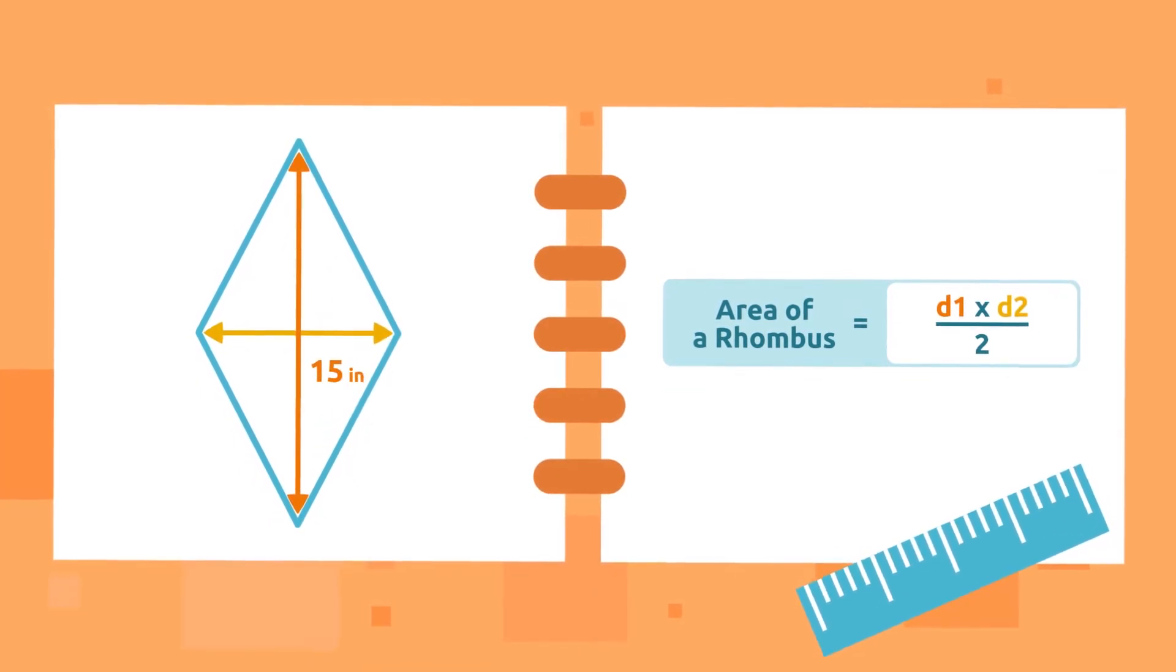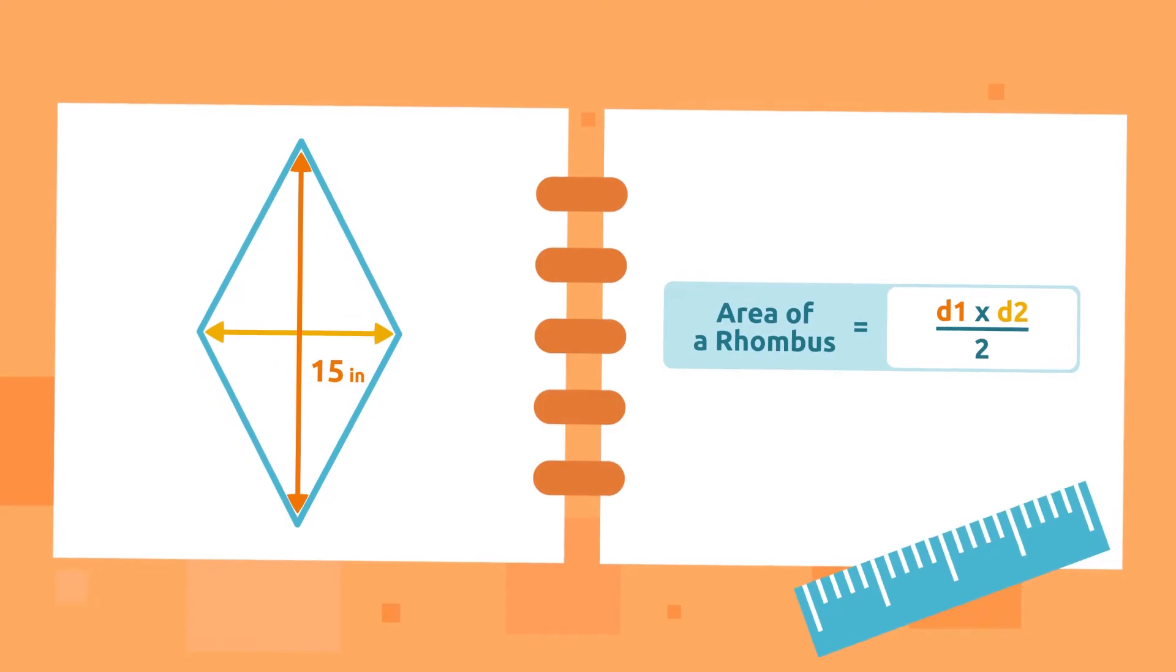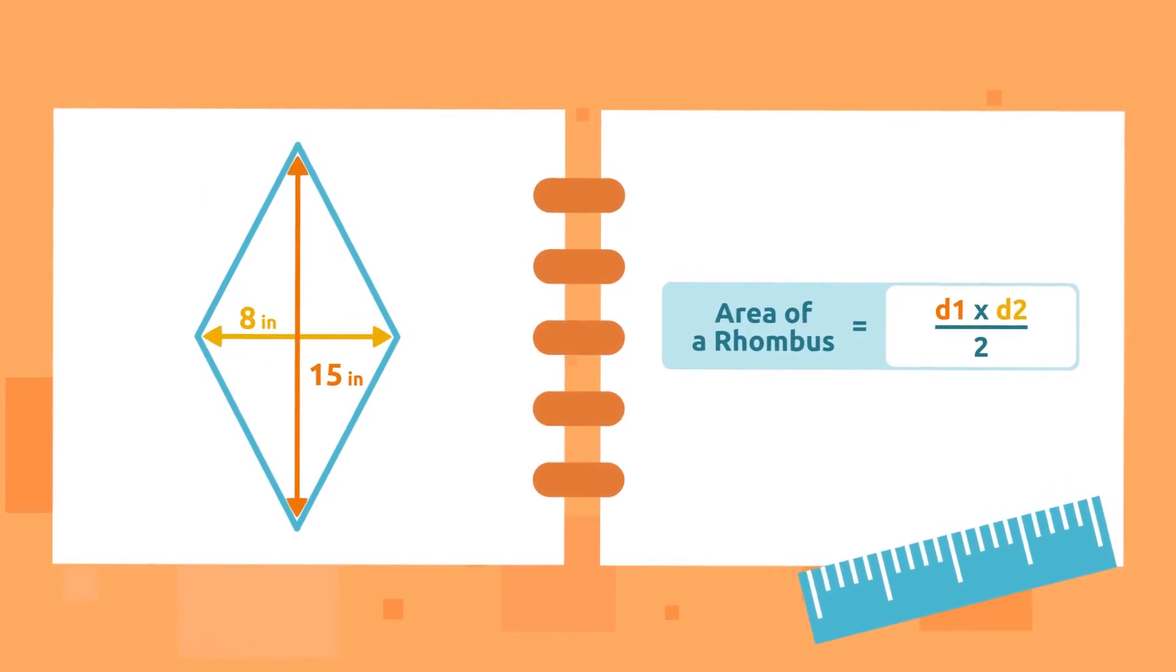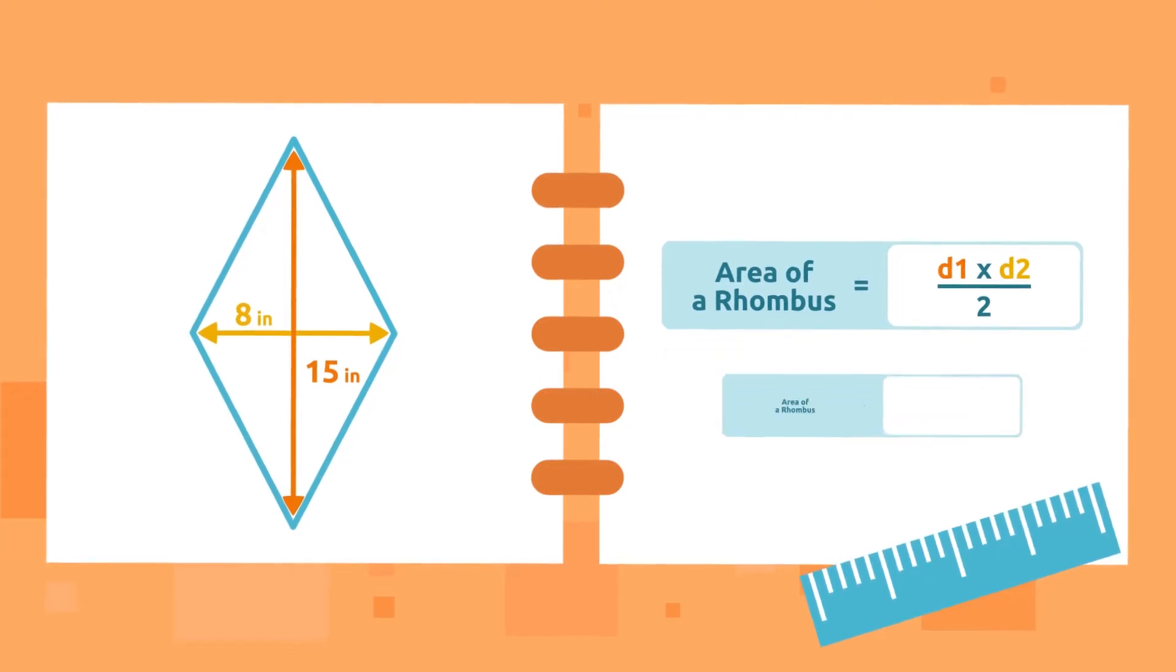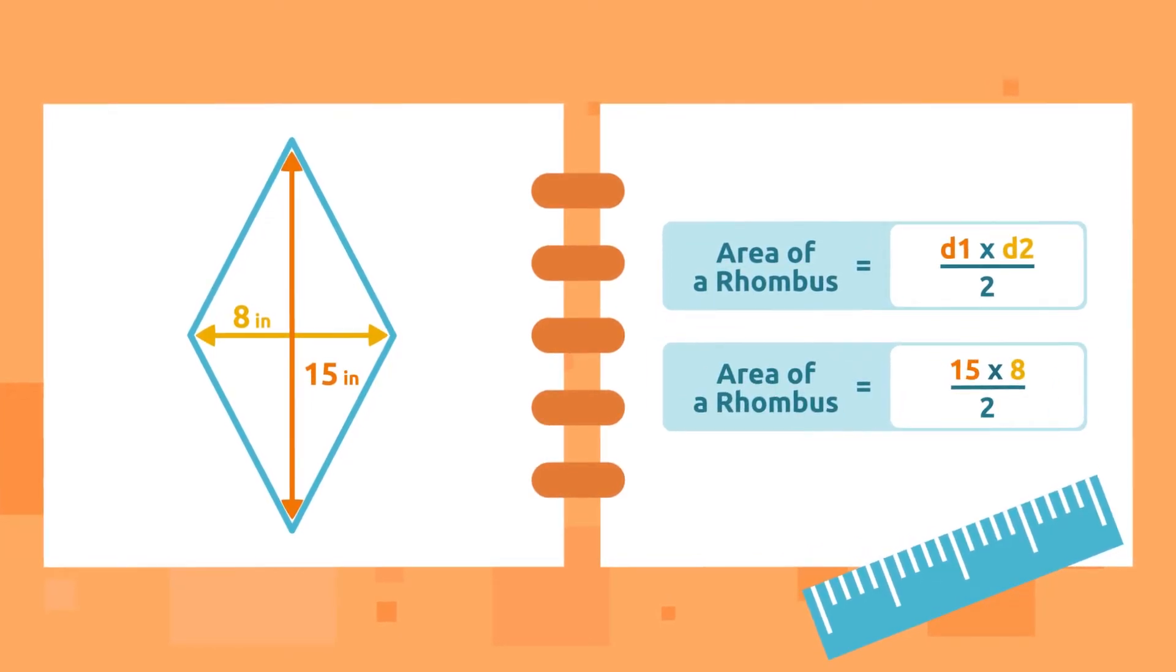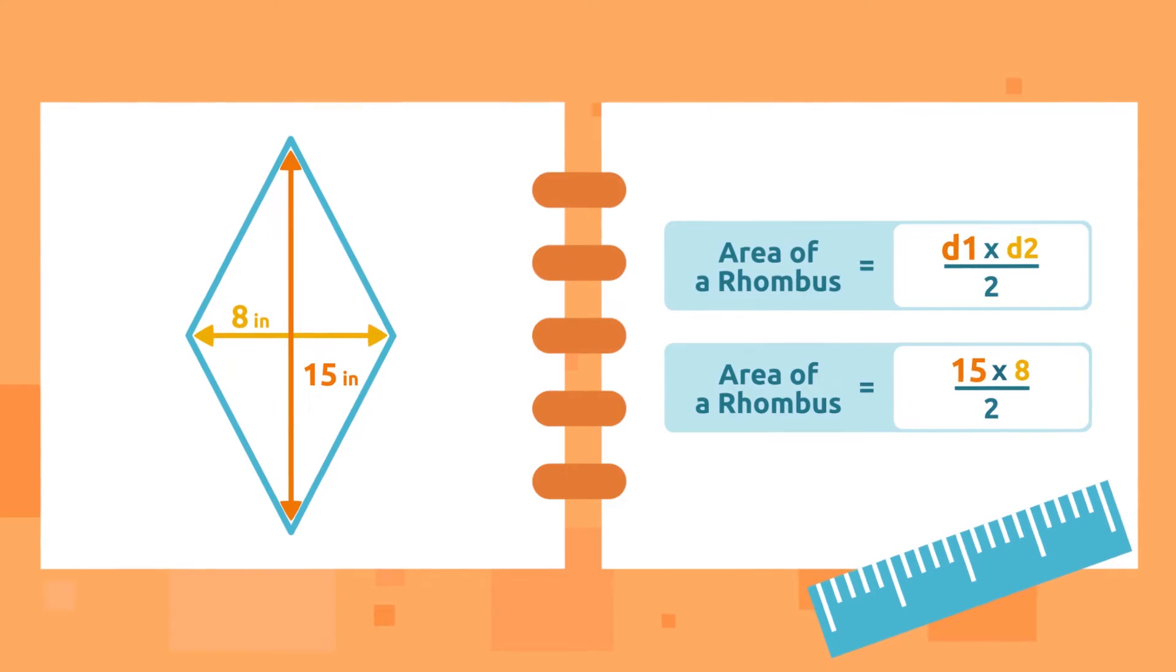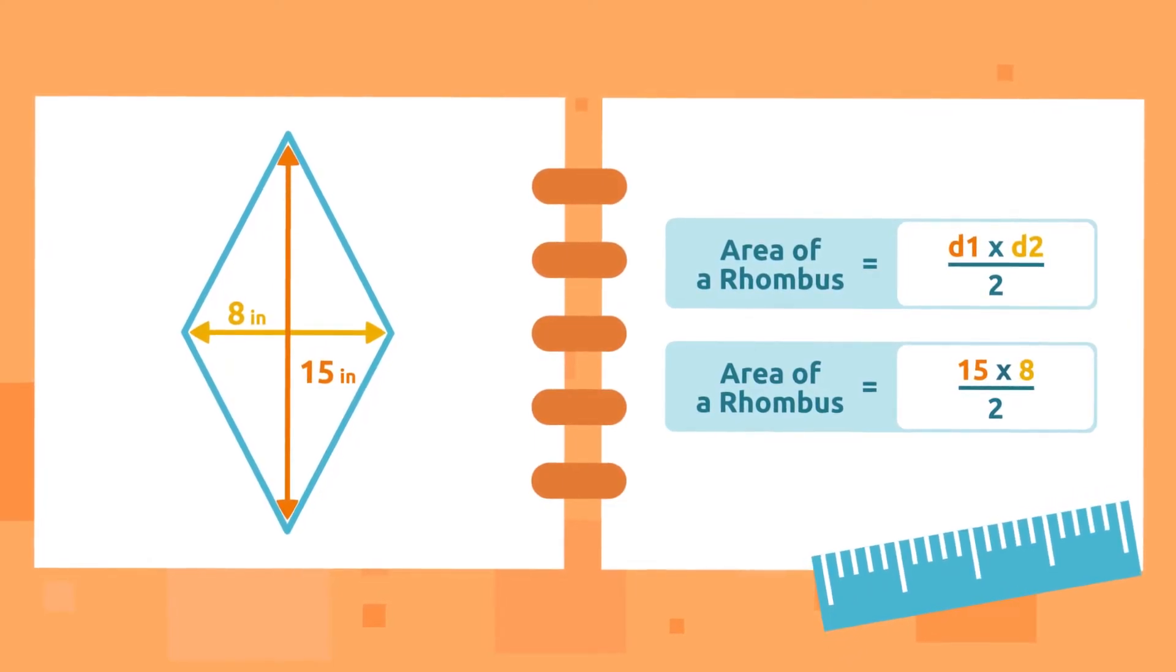The longest diagonal of this rhombus measures 15 inches and the shortest diagonal measures 8 inches. What will its area or surface be? To calculate the area or surface of a rhombus, we must multiply the longest diagonal by the shortest diagonal and then divide by 2.